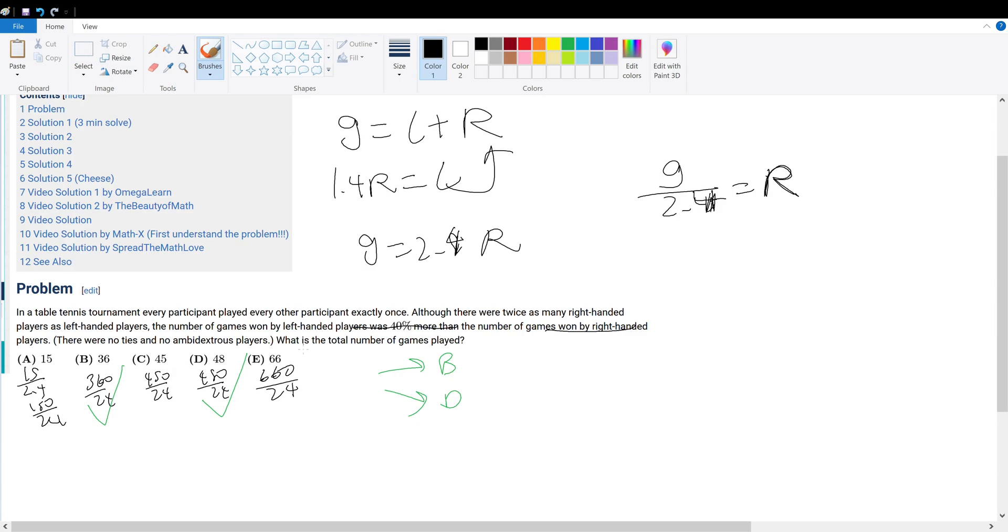We know that since every player plays every other player exactly once, the number of games played by each individual player is n minus 1, and there are n players. So if we set this to be the total number of games played, we would have double counted.